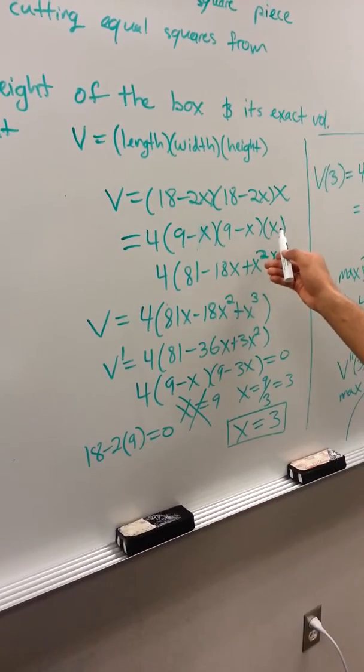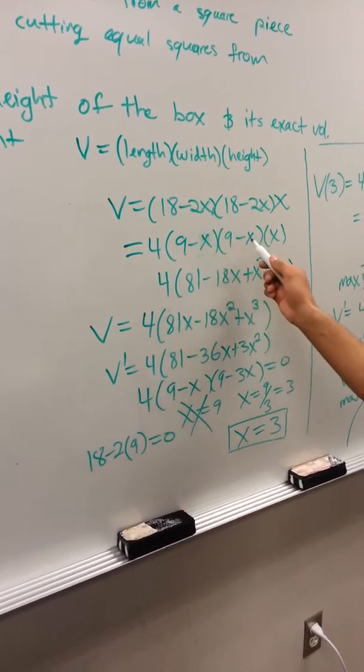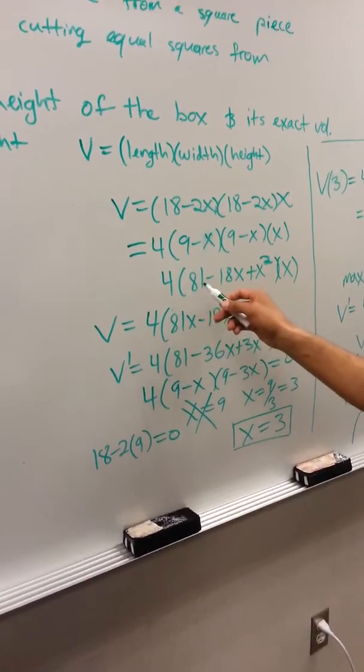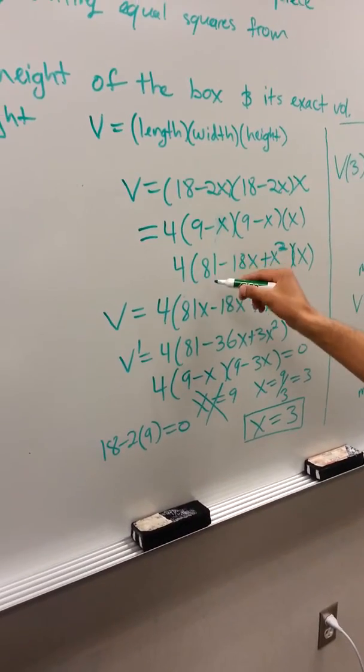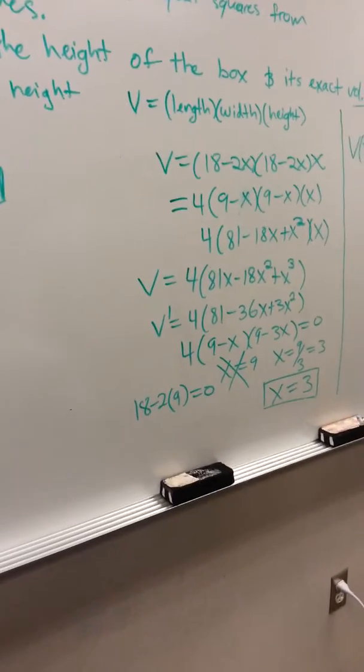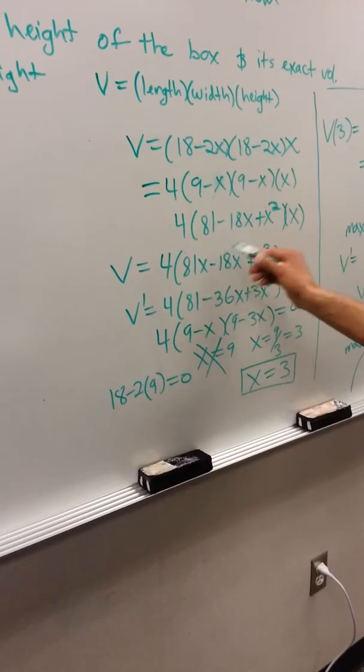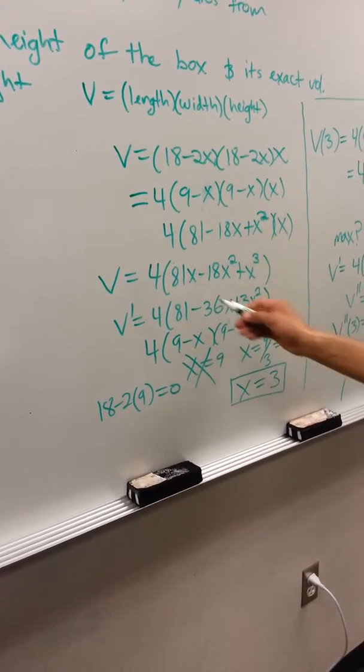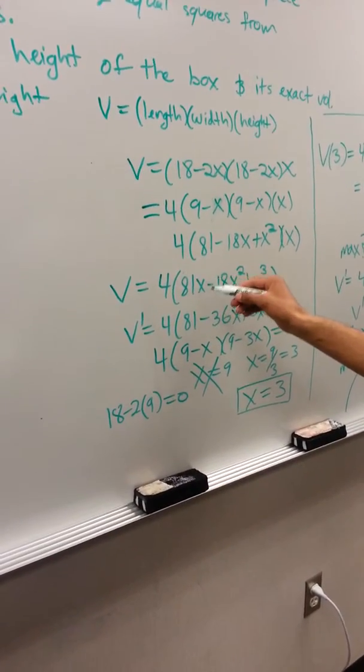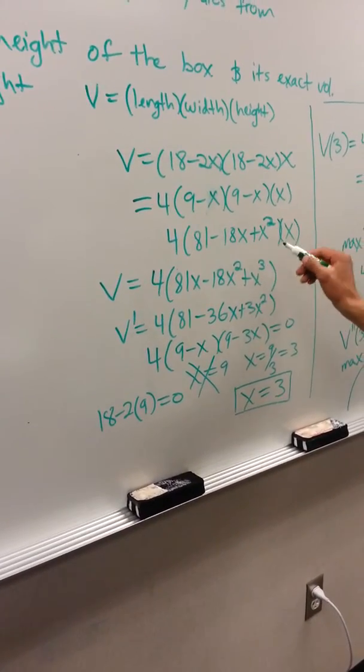Next we just multiply these all out, do your foiling, and we end up with 4 times (81 - 18x + x²) times x. After this, we distribute this x through what's in the parentheses, so we end up with 4 times (81x - 18x² + x³).